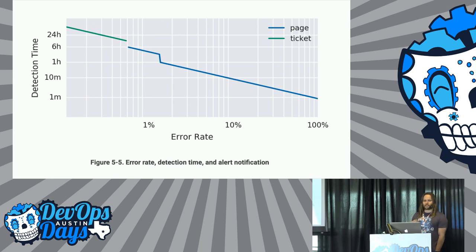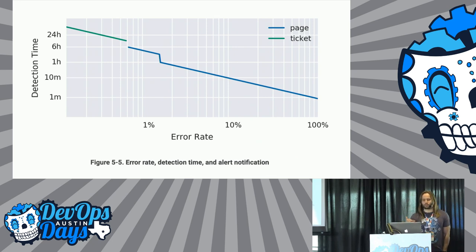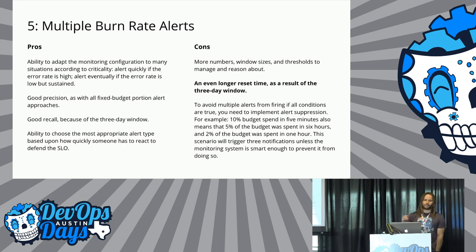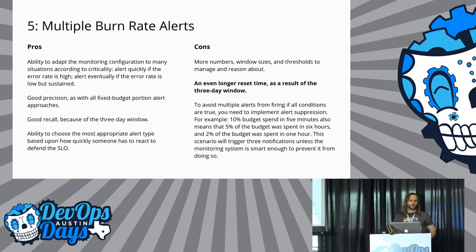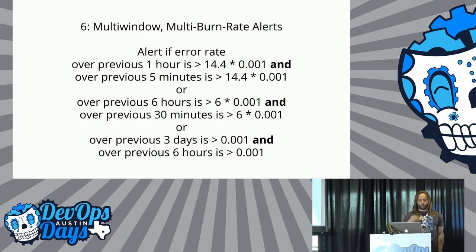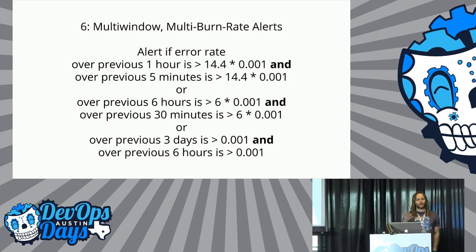Multiple burn rates allow you to adjust the alert to give appropriate priority based on how quickly you have to respond — whether an issue will exhaust the error budget within hours or a few days. If it will, sending an active notification is appropriate; otherwise, a ticket-based approach should be sufficient. The major con of multiple burn rate alerts is that the 3-day alert window will still take a very long time to reset. If we spent 3 days observing 10% budget burn, we have to wait another 3 days rolling to confirm it's no longer happening.